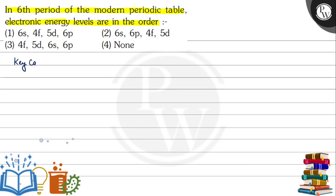The key concept here is electronic configuration. According to the Aufbau principle, electrons first enter the orbital with the least n plus l value. If two orbitals have the same n plus l value, the electron enters the one with the least n value.